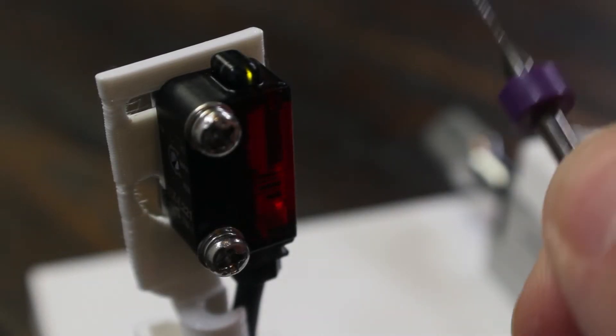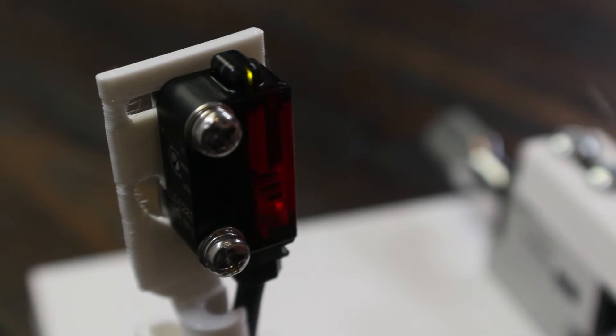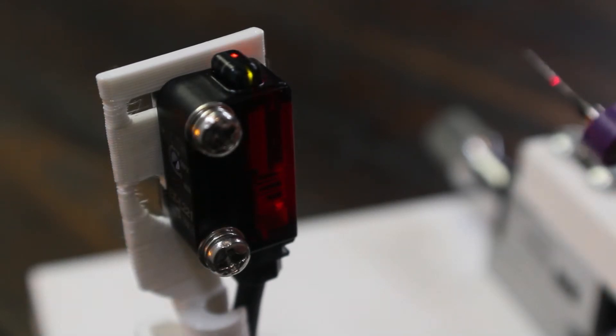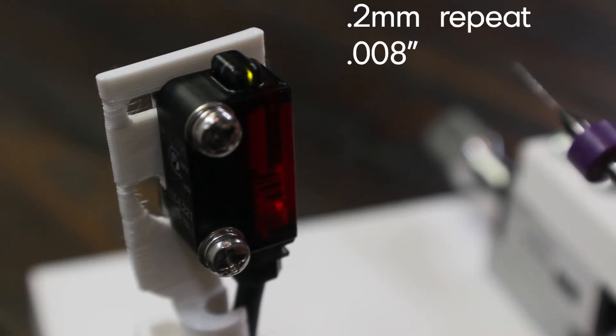This is the EX-L221. The minimum detectable object is 0.01 mm reflective wire, that is roughly 0.010 of an inch, with a repeat accuracy of 0.2 mm or around 0.008 of an inch.